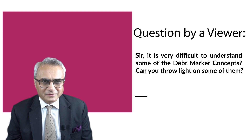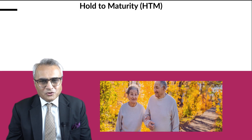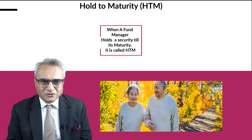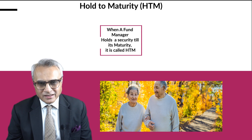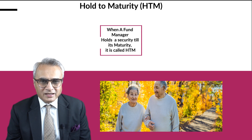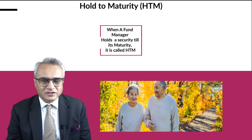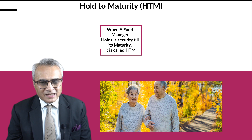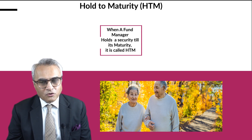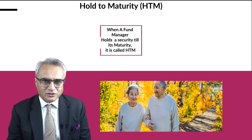Let me take them one by one. HTM or Hold to Maturity is when a fund manager buys a security and holds it till its maturity. Debt papers, as we have seen in past episodes, have a fixed maturity or a fixed tenor of one year, three years, or five years. So if a fund manager has bought a debt security with a maturity of five years and holds it for five full years, that's what we call HTM or Hold to Maturity.